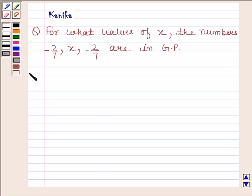Let's begin with the solution. We know that in GP, the ratio of any term to the preceding term is always the same. So, the numbers -2/7, x, -2/7 will be in GP